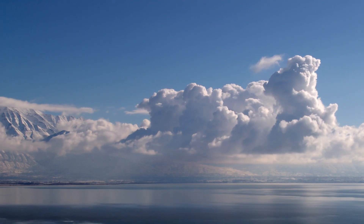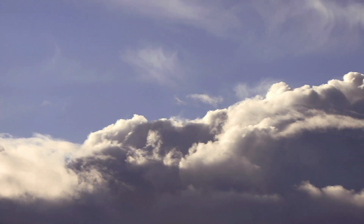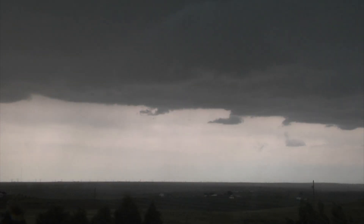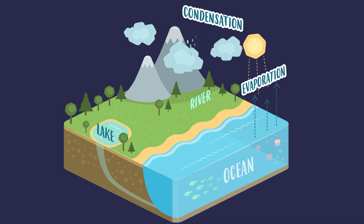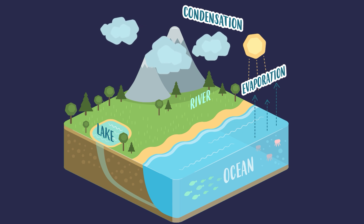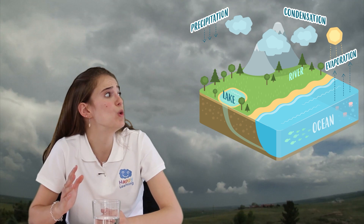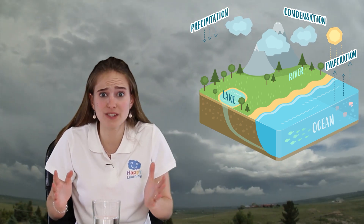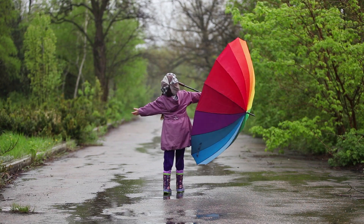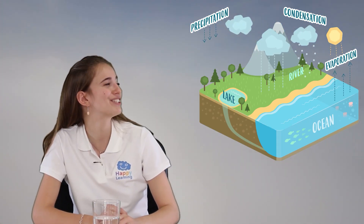Clouds travel through the air, collecting more and more water droplets. These water droplets become bigger and heavier, and then the next phase in the cycle arrives — precipitation! The clouds can no longer hold all these water droplets so they fall. They precipitate onto the earth in the form of rain, hail or snow.